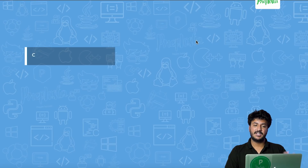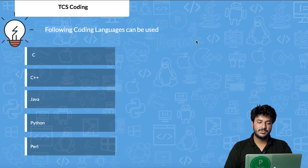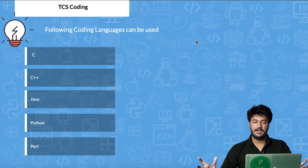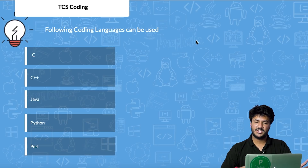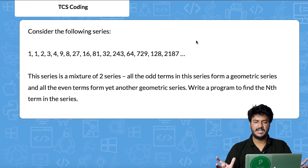Apart from that, practice all the first-year engineering programming questions. The languages you can use in TCS are C, C++, Java, Python, and Perl. We are going to first explain the algorithm for the question we are taking, and then show you the code in each of the languages.